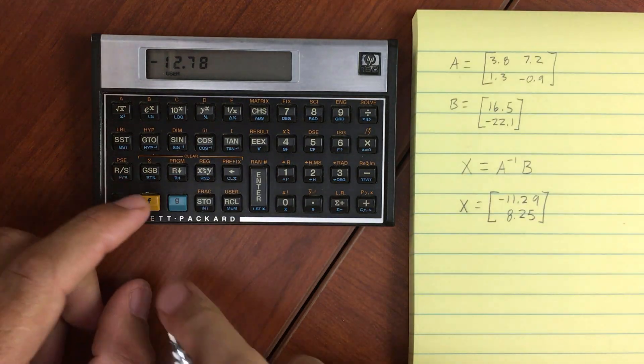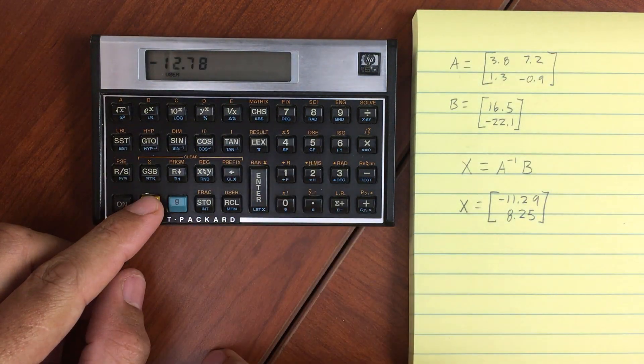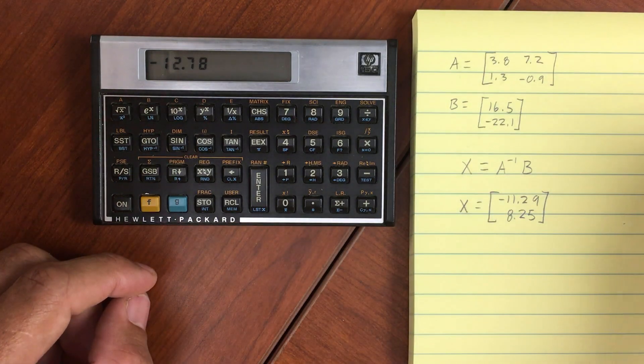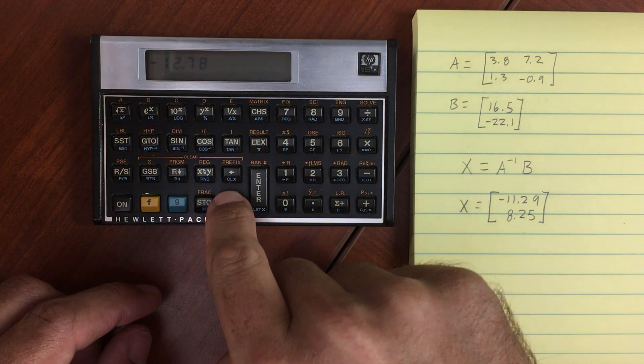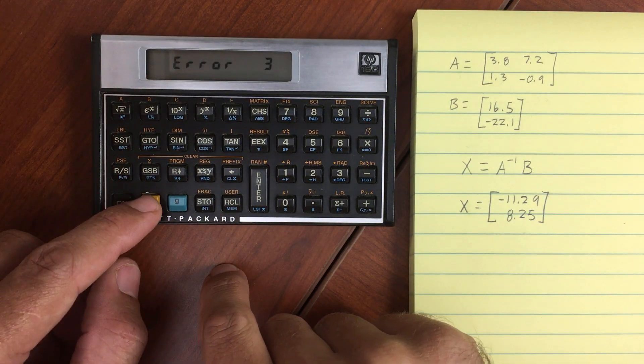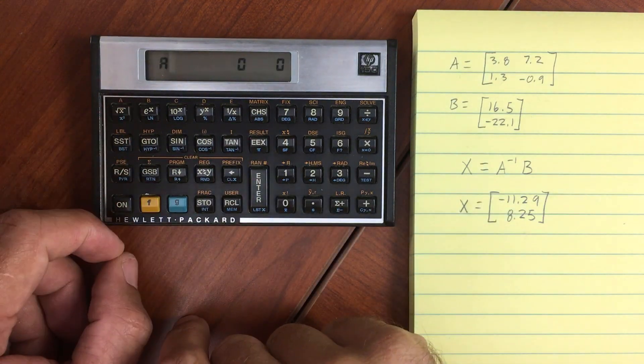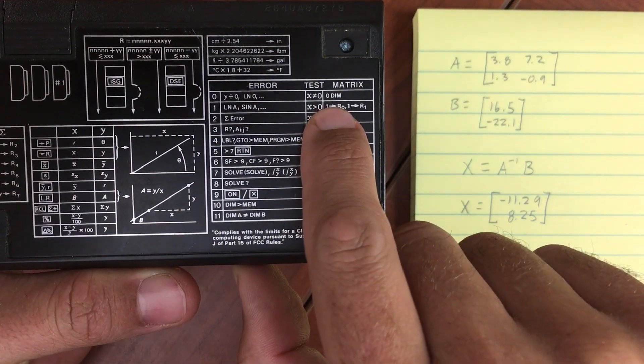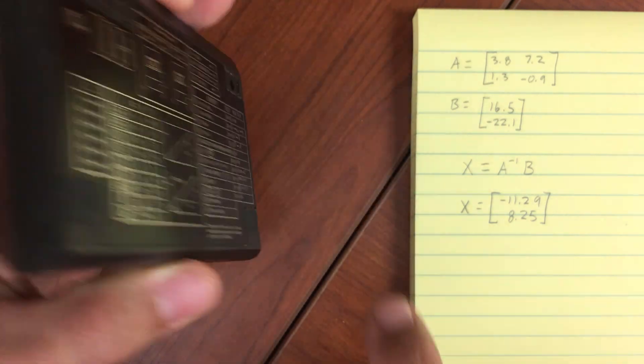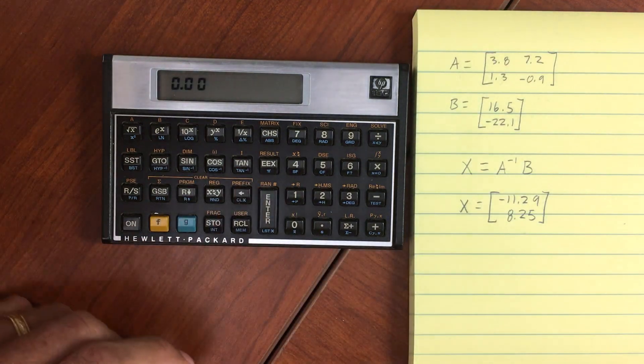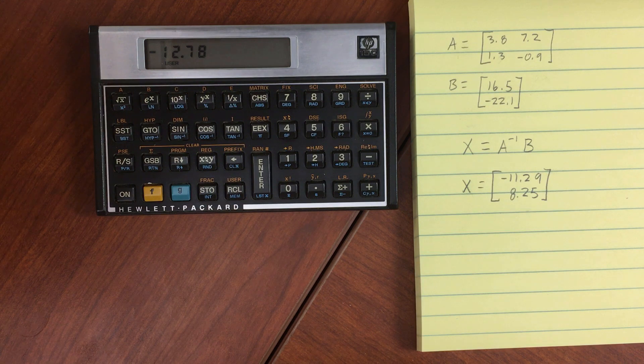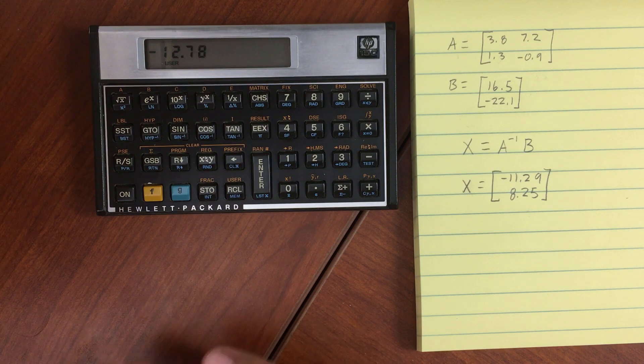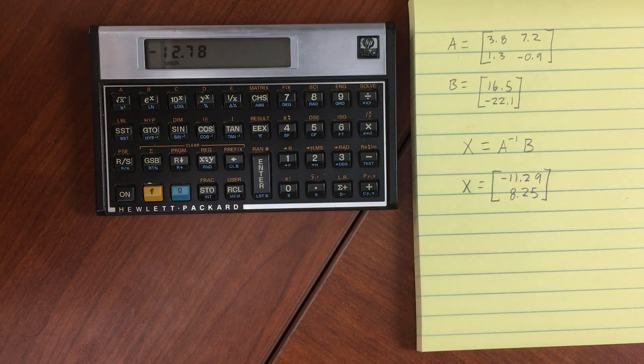To clear the matrix, let's just do matrix operation 0. And to get out of user mode, shift user. And we should be reset. If I go to recall A, it will give me an error. Recall matrix A. It's a 0 by 0 matrix. So what we did, again, if you look on the back, we did matrix operation 0, which gives us 0 dimension matrices. So that's matrices in a nutshell. Of course, there's lots of different things you can do with indexing and larger matrices, allocating memory to your registers, etc. But that's something that's best saved for the manual.